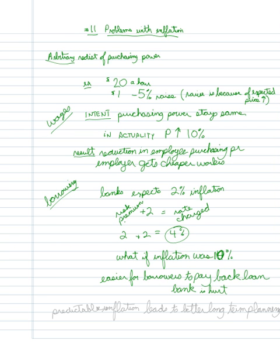What you see in these two examples is that it's important to be able to have predictable inflation and that this helps then with long-term planning. So predictable inflation leads to better long-term planning.